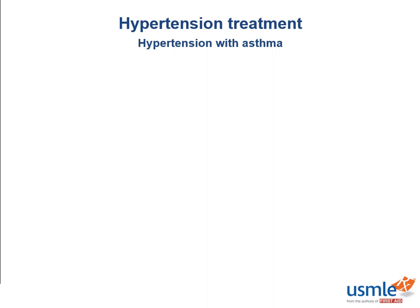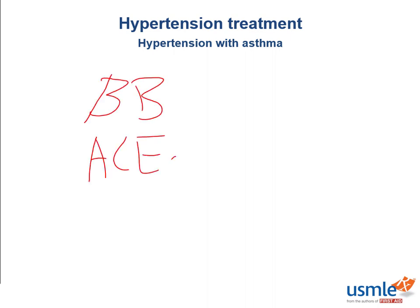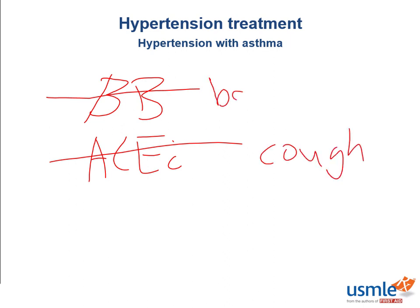What two antihypertensive medications should you avoid in patients with asthma? That would be non-selective beta blockers as well as ACE inhibitors. ACE inhibitors have a major side effect of cough, and beta-2 receptors cause bronchial relaxation — that's why we give short and long-acting beta agonists to treat asthma. Therefore, non-selective beta blockers will block beta-2, inducing the opposite, which would be bronchoconstriction — not something you want with asthma.